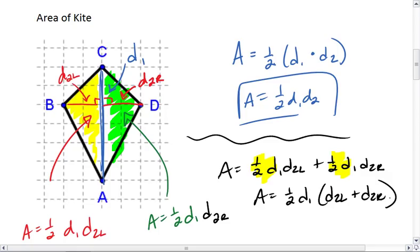Take a minute and look at this. D2L plus D2R is the entire length of D2, that second diagonal. So for a kite, the area is 1/2 D1 D2.